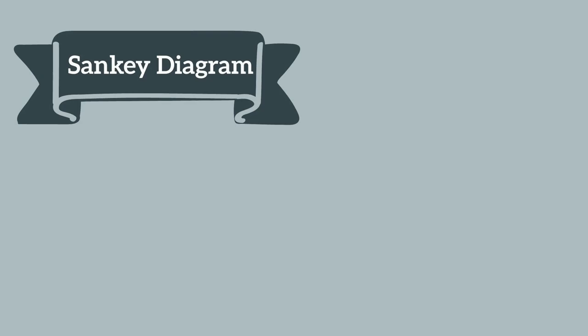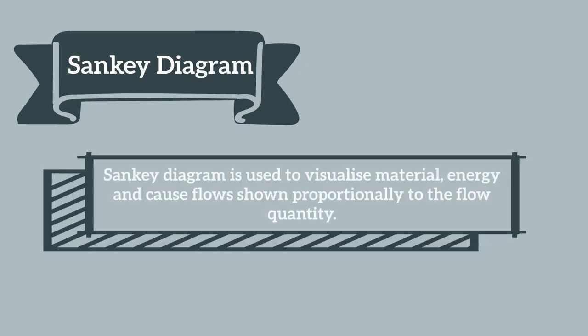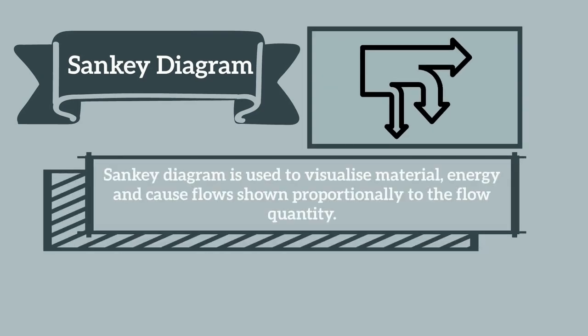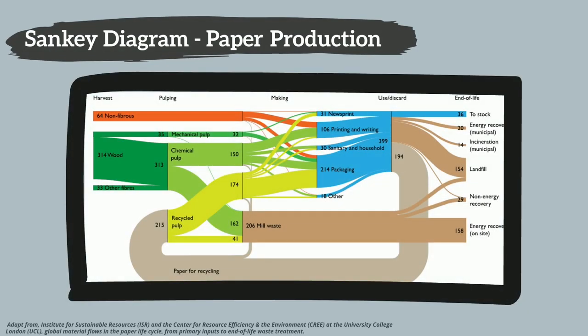A Sankey diagram is used to visualize material, energy, and cause flow shown proportionally to the flow quantity. This is the example of a Sankey diagram from the production of paper.